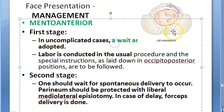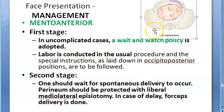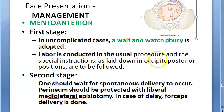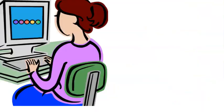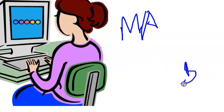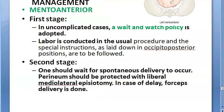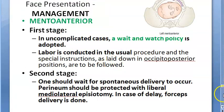In mento anterior management: first stage - you can wait and watch as the head will turn. Second stage - wait for spontaneous delivery to occur. Important: in face presentation you should not do vacuum delivery. In mento anterior with a completely extended head, the submentobregmatic diameter of 9.5 cm is what you need to remember.